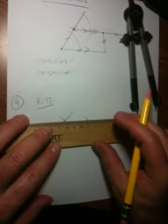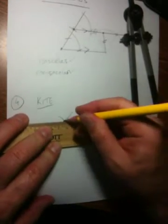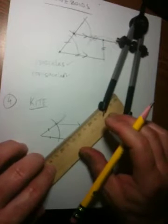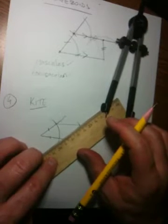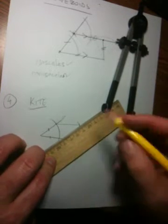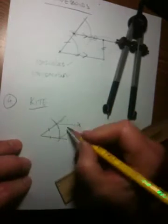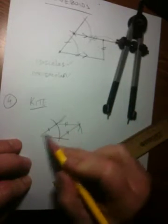If I now connect those points, point of intersection with my other points of intersection, the endpoints of my other congruent sides, I end up with a kite where these two are congruent and these two are congruent.